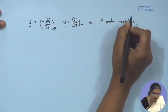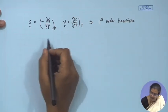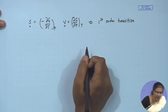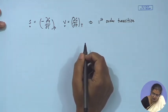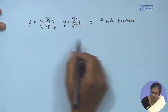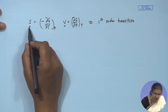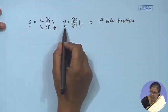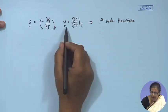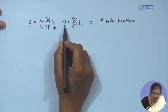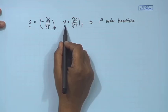In second-order transitions, what happens is that the first derivatives of the thermodynamic potentials — namely entropy and volume — remain constant, while the second derivative exhibits an abrupt discontinuity at the phase transition.